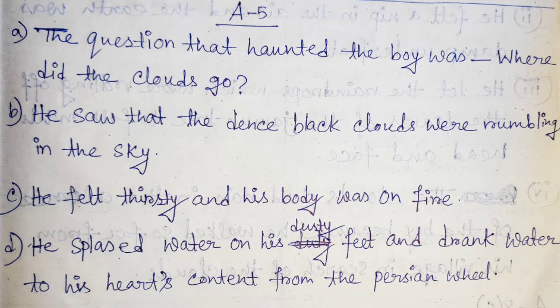Question: How did he feel as he walked between the fields? Next question: What did he do after reaching the shelter of a tree? Answer: He splashed water on his dusty feet and drank water to his heart's content from the Persian wheel.